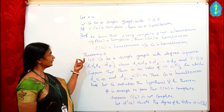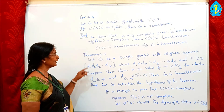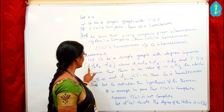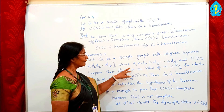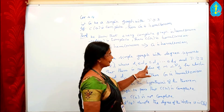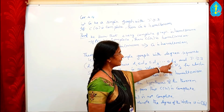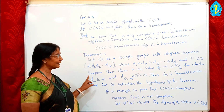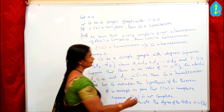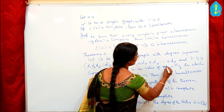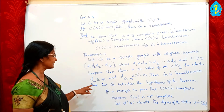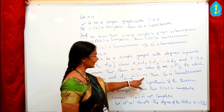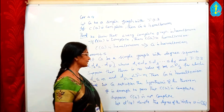Next we are going to see Savath's Theorem, that is Theorem 4.5. Let G be a simple graph with degree sequence D1 ≤ D2 ≤ D3 ≤ … ≤ D_gamma, where gamma ≥ 3. Suppose that there is no value of M ≤ gamma/2 for which D_M ≤ M and D_{gamma−M} < gamma − M. Then G is Hamiltonian.